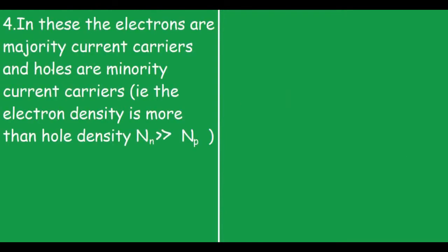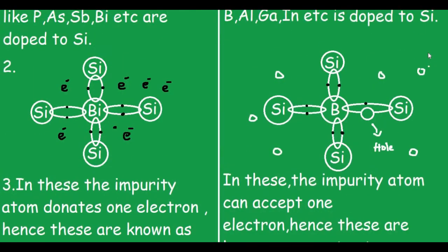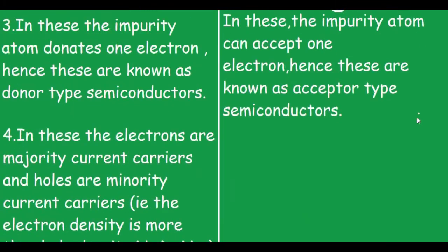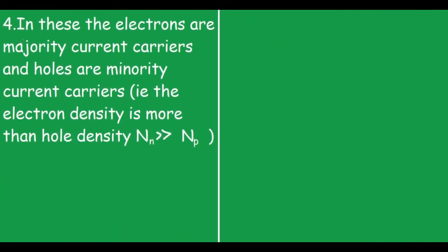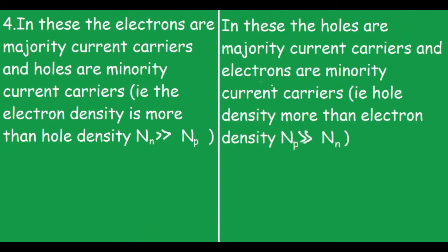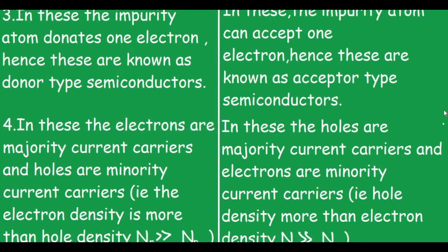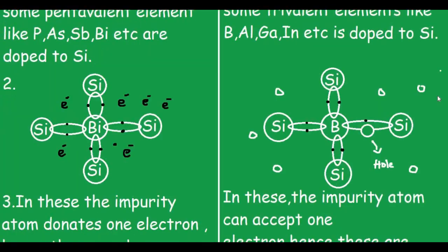The fourth point: in N-type semiconductors, electrons are majority current carriers and holes are minority current carriers — that is, the electron density is way more than the hole density. For the P-type semiconductor, holes are majority current carriers and electrons are minority current carriers — that is, hole density is greater than electron density.